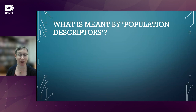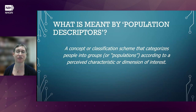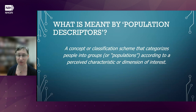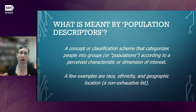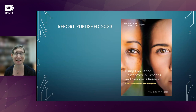What is meant by the term 'population descriptors'? The definition used in the National Academies report is a concept or classification scheme that categorizes people into groups, sometimes referred to as populations, according to a perceived characteristic or dimension of interest. Examples could include self-identified race, racial description, race or ethnicity, geographic location, understood ancestry, and genetic ancestry — a long list of ways in which we could classify and describe populations. The report was published in 2023, and as detailed there, investigators often use population descriptors inconsistently and inappropriately.